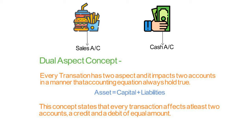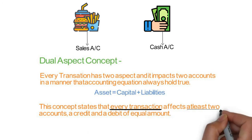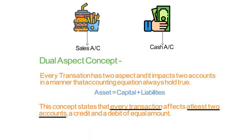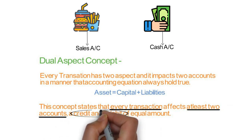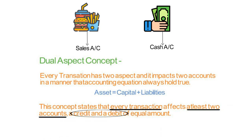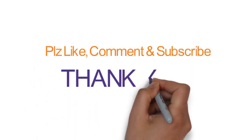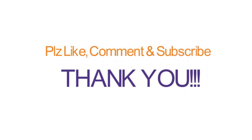To summarize: the dual aspect concept states that every transaction affects at least two accounts — a debit and a credit of equal amount. That's all you need to remember. Please like, comment, and subscribe. Thank you.